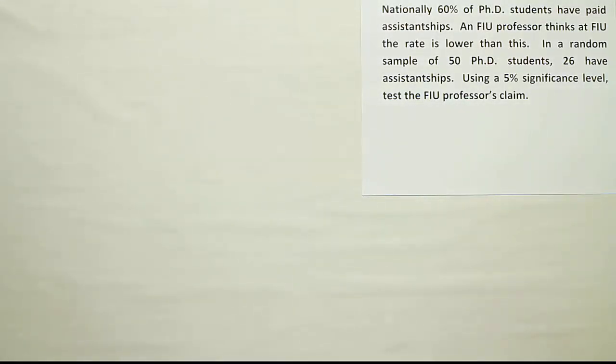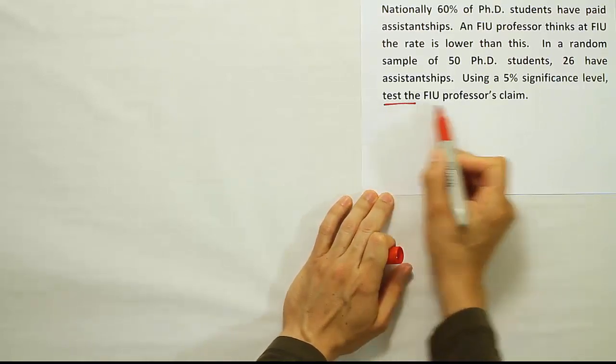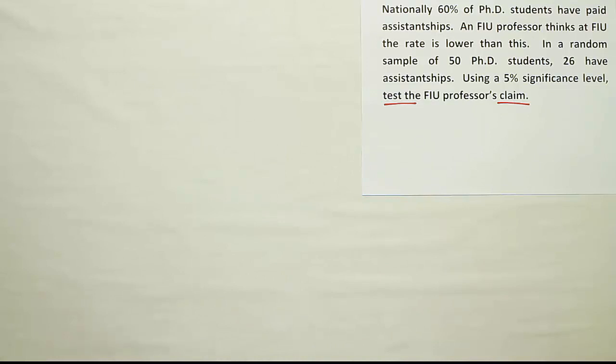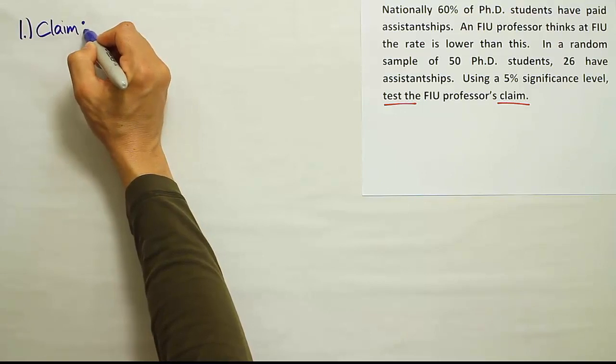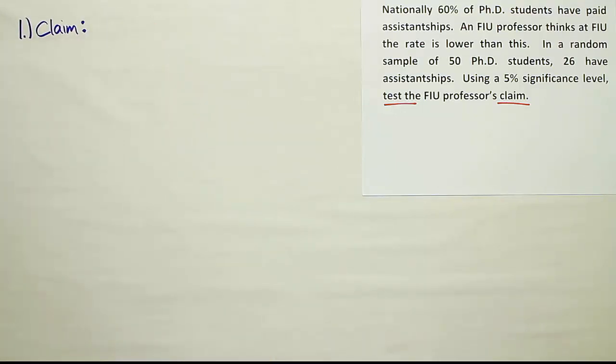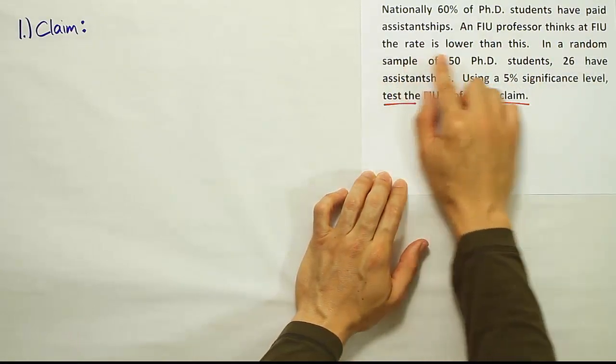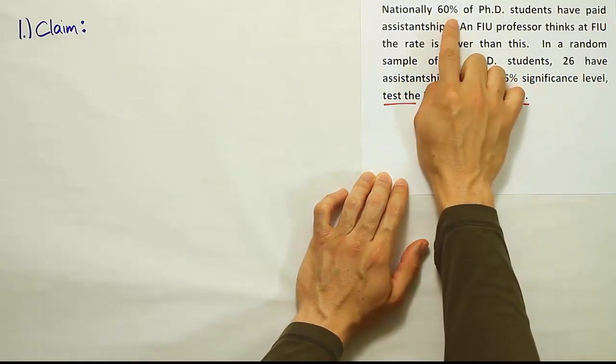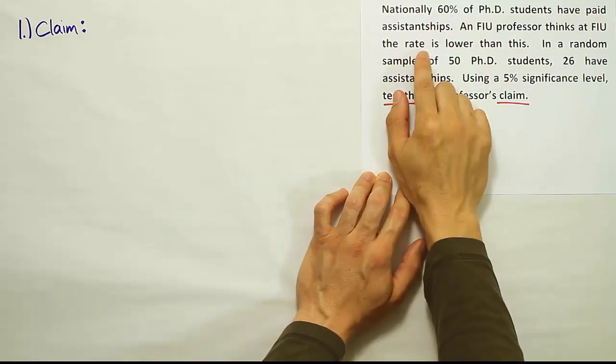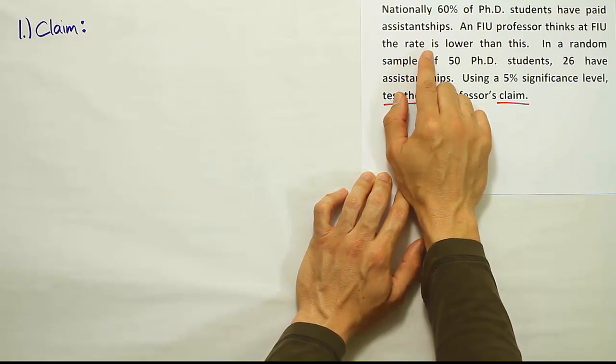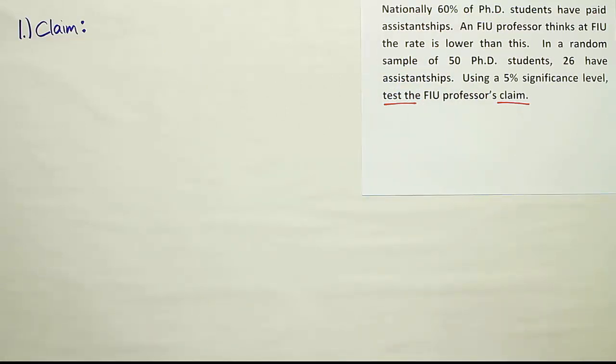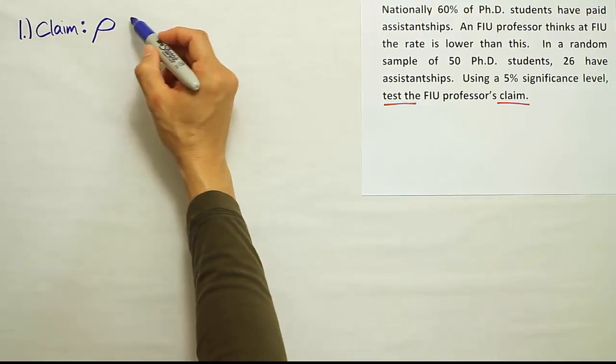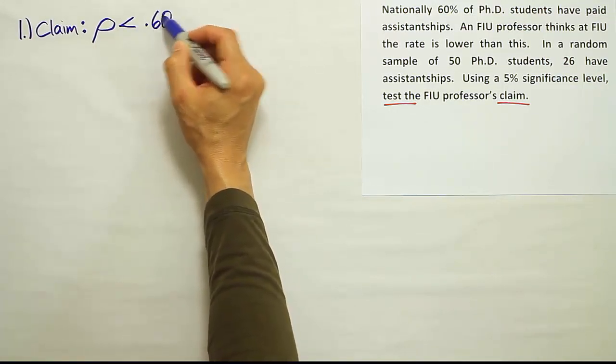Alright, so they're telling us that we want to test the professor's claim. Test the claim. Anytime it says that, we know we're dealing with a hypothesis test. So at that point, let's try to identify the claim. The claim is that an FIU professor thinks at FIU, the rate is lower than this national percentage of 60%. So it's about the rate. The claim is about a rate. That means we're dealing with the proportion. So his claim is that the proportion is lower than 60%, lower than the national rate.